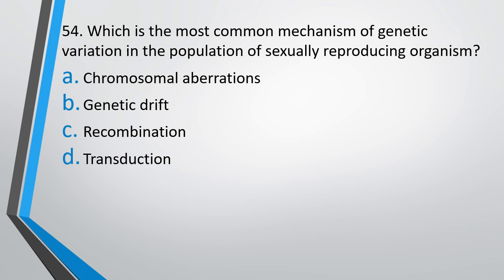Question No. 54. Which is the most common mechanism of genetic variation in the population of sexually reproducing organisms? Option A: Chromosomal aberration. Option B: Genetic drift. Option C: Recombination. Option D: Transduction. The correct answer is Option C: Recombination.